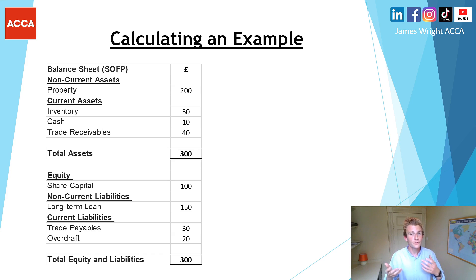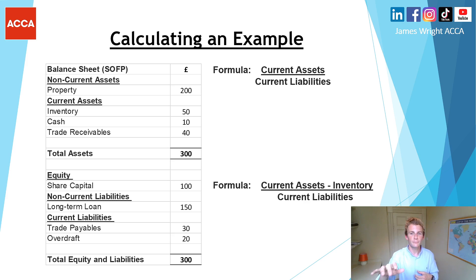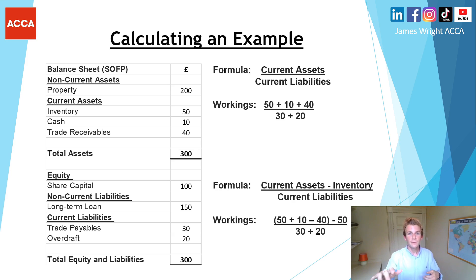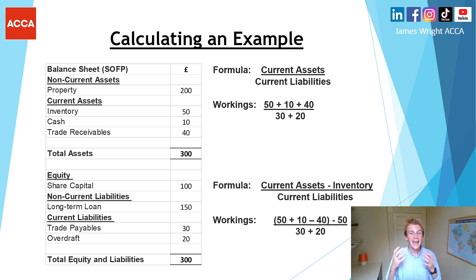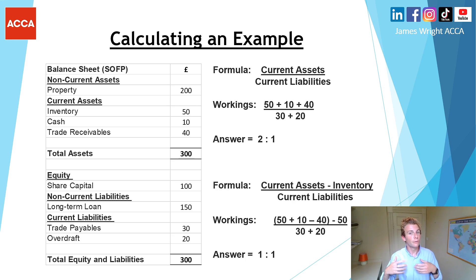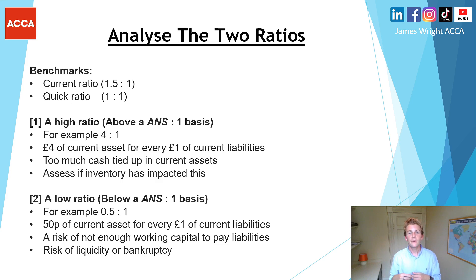Now we're going to calculate this using an example. First, make sure you write down the formulas in your examination so the marker can follow your workings. As you can see, the current ratio includes inventory whereas the quick ratio deducts it — shown by the minus 50 in the formula. This gives us an answer of 2 to 1 for the current ratio and 1 to 1 for the quick ratio, which we now need to go on and interpret.